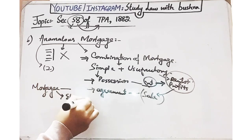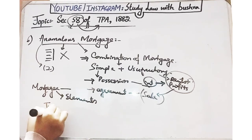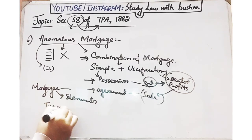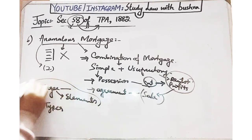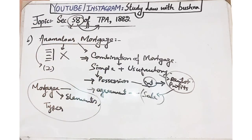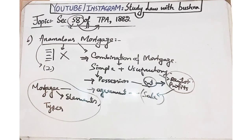Is tarah humne Section 58 of TPA ke essential elements ko dekha aur phir saath humne unki kinds ko bhi in detail one by one discuss kiya. Agar yeh video aachi lagi hai to is video ko like karein, comment karein, aur channel ko subscribe karna na bhoolein. Thank you so much for watching. Allah Hafiz.